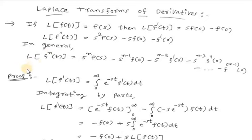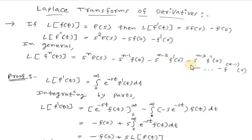In general, we have Laplace of the nth derivative of f(t) equals s^n·F(s) minus s^(n-1)·f(0) minus s^(n-2)·f'(0) minus s^(n-3)·f''(0) minus ... minus f^(n-1)(0).